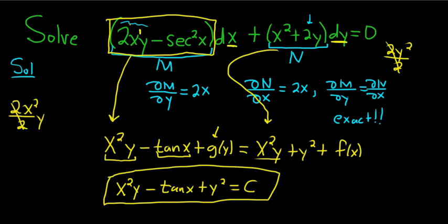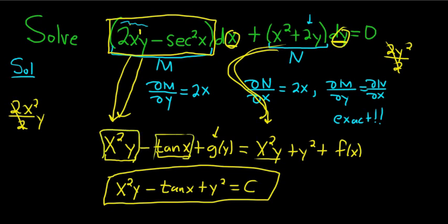To recap: you integrate M with respect to x, integrate N with respect to y, set them equal to each other, then write down each unique term only once — don't repeat terms you've already written. Then set it equal to c. And if you're wondering if this method always works, the answer is yes, it always works.